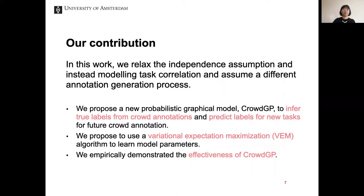In this work, we relax the independence assumption and instead model task correlation, assuming a different annotation generation process. Our contributions are three-fold: we propose the probabilistic graphical model CrowdGP to infer true labels from crowd annotations and predict labels for new tasks; we propose a variational expectation maximization algorithm to learn model parameters; and we empirically demonstrate the effectiveness of CrowdGP.